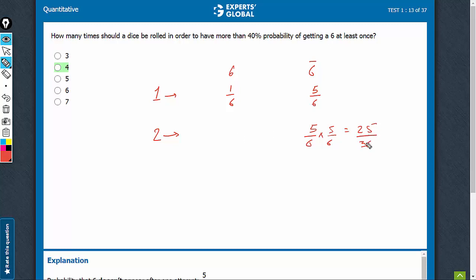So, 25 upon 36 is definitely more than 0.3. So, two attempts are not enough.